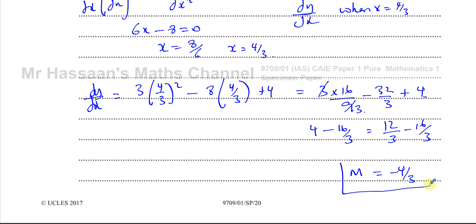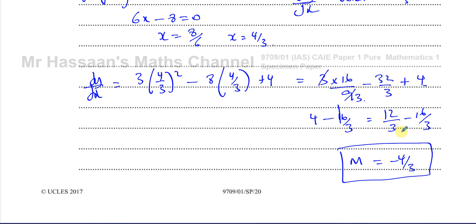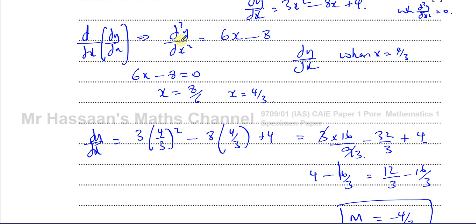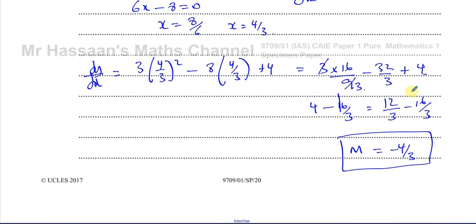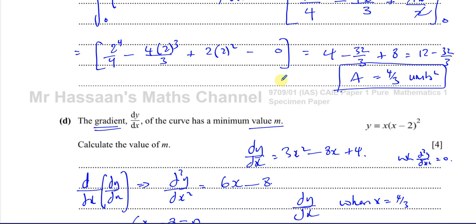So the minimum value of the gradient M equals negative 4 over 3. If the question asked us to justify why it's a minimum, we'd differentiate 6x minus 8 to get 6, which is positive, confirming a minimum. But that justification isn't required here. This is a tricky part because they're asking for the minimum value of the gradient function, not the curve — so you need the second differential.